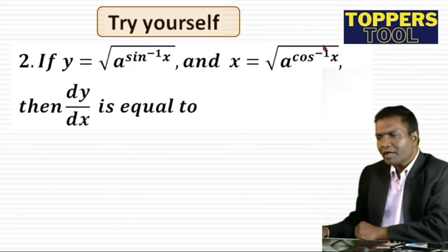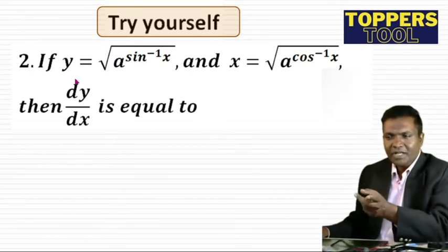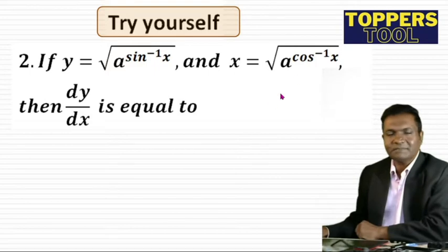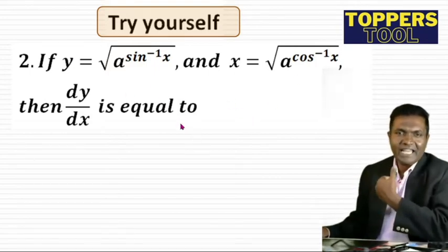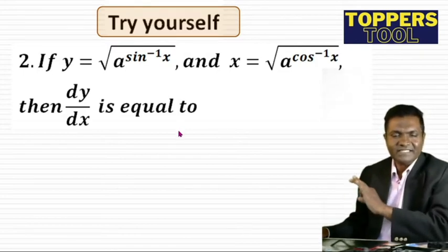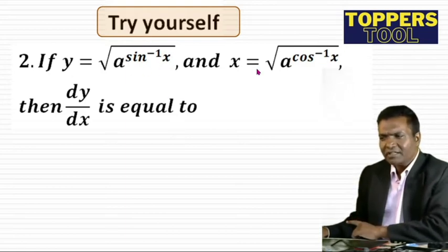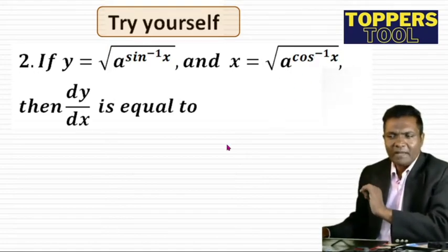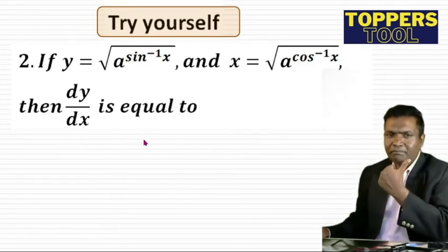Let's move on to the next: y = √(a^(cos⁻¹x)). Then dy/dx equals what? The same method applies. If we multiply, a^(sin⁻¹x) · a^(cos⁻¹x) = a^(π/2), which is constant. So the answer remains the same: dy/dx = -y/x. This applies for tan⁻¹, cot⁻¹, sec⁻¹, cosec⁻¹ pairs as well — you will always get dy/dx = -y/x.